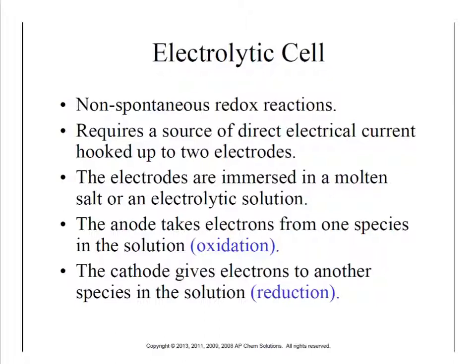We take two electrodes that we hook up to a positive and negative power source, and we immerse those electrodes in a molten salt — a melted salt — or an electrolytic solution. That means we take a salt and either melt it or dissolve it in water, so it's either aqueous or liquid.